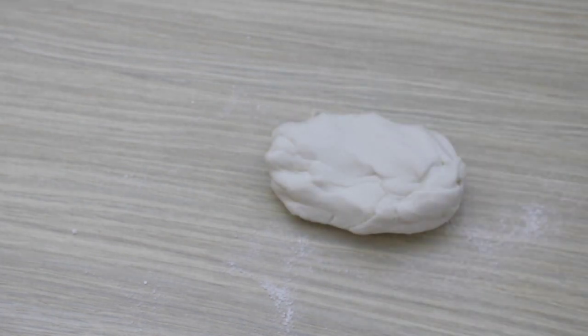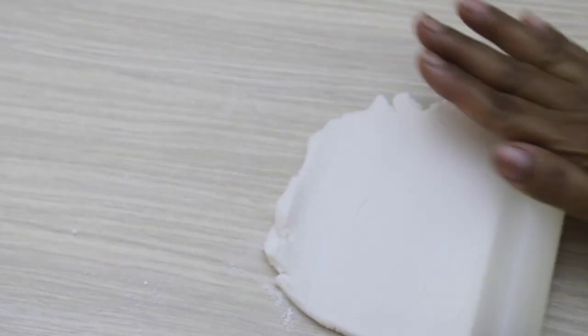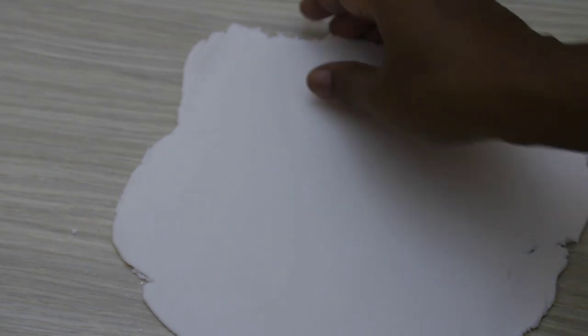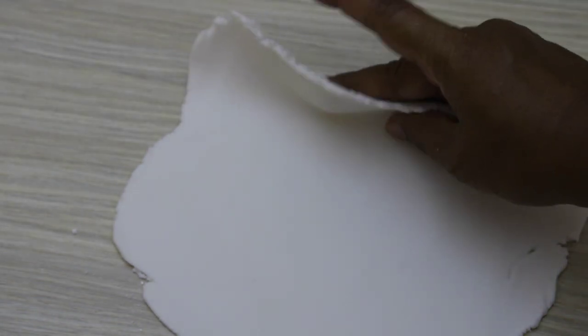First dust some cornflour here. Now I roll out my fondant, don't make it too thin. Let me show you the thickness like this.